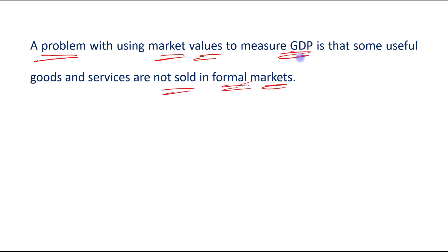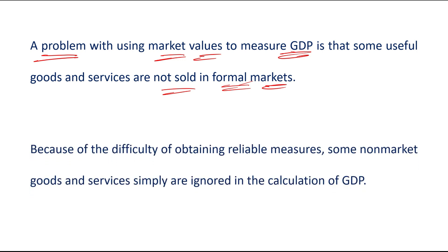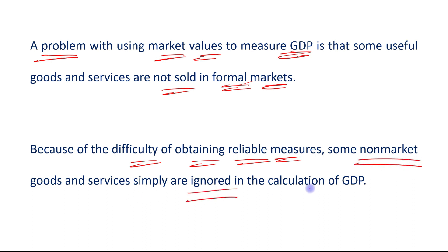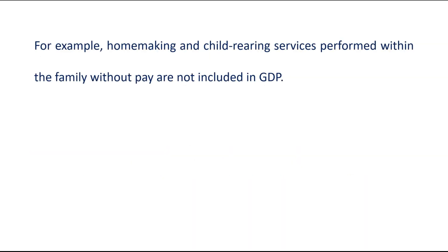How we will use the market value to measure GDP — this is its problem. Because of the difficulty of obtaining reliable measures, some non-market goods and services are simply ignored in the calculation of GDP. For example, home-making and child-rearing services performed within the family without pay are not included in GDP.